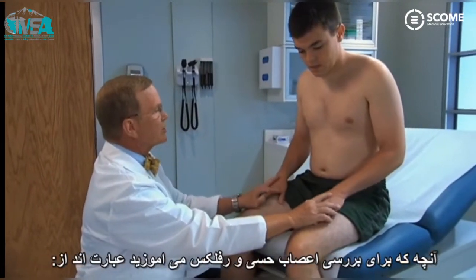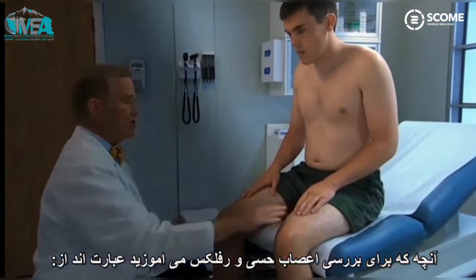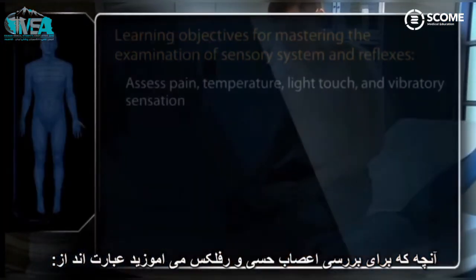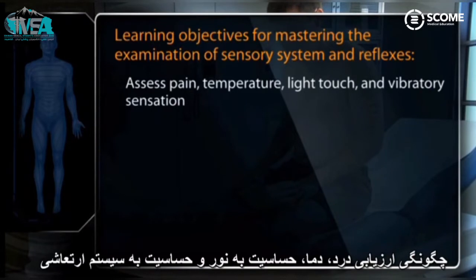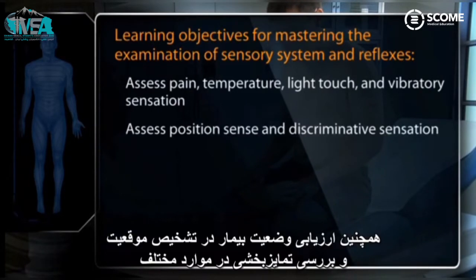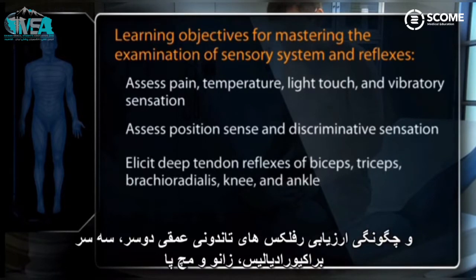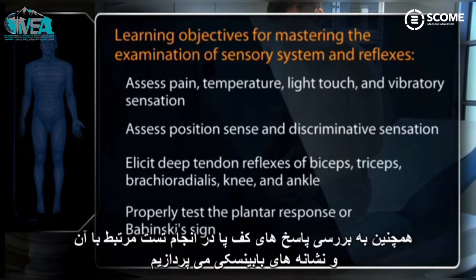Your learning objectives for mastering the examination of the sensory system and reflexes are to assess pain, temperature, light touch, and vibratory sensations, as well as position sense and discriminative sensation, and to correctly elicit the deep tendon reflexes of the biceps, triceps, brachioradialis, knee or patellar tendon, and ankle or Achilles tendon, as well as to properly test the plantar response or Babinski sign.